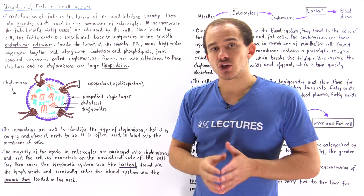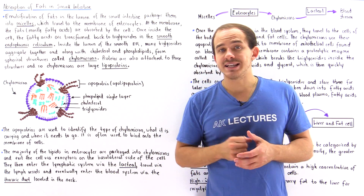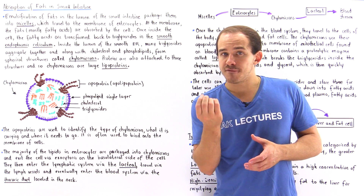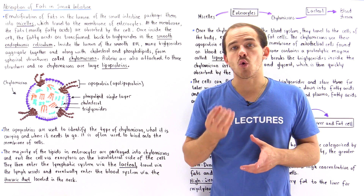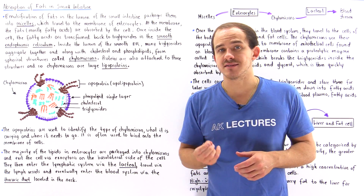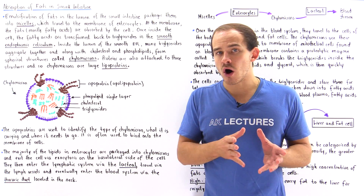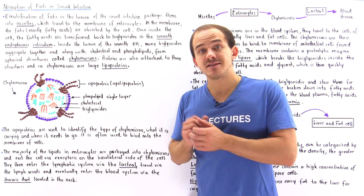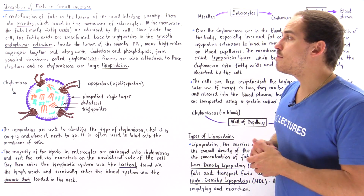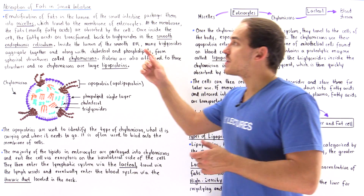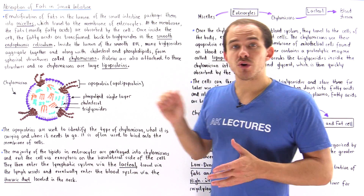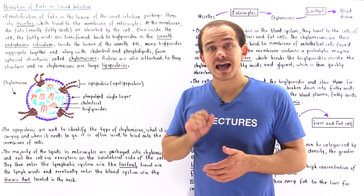Micelles are very small, very tiny spheres that contain a fatty acid or a cholesterol molecule, and these micelles are so small that they can easily pass across the membrane of enterocytes.